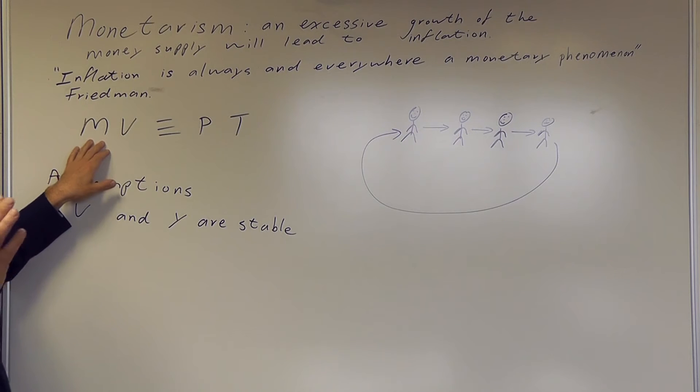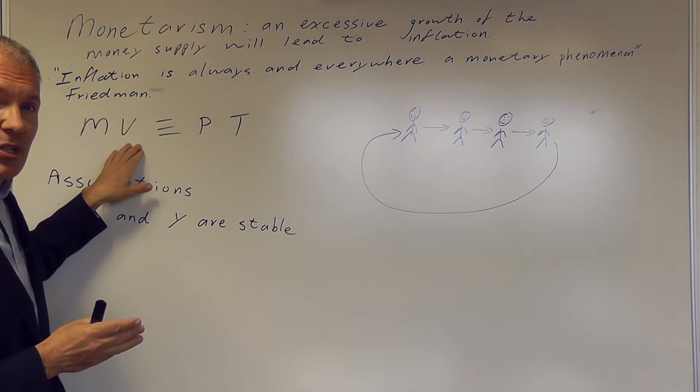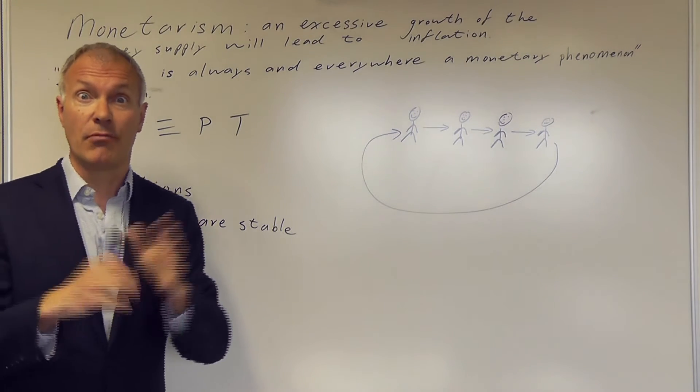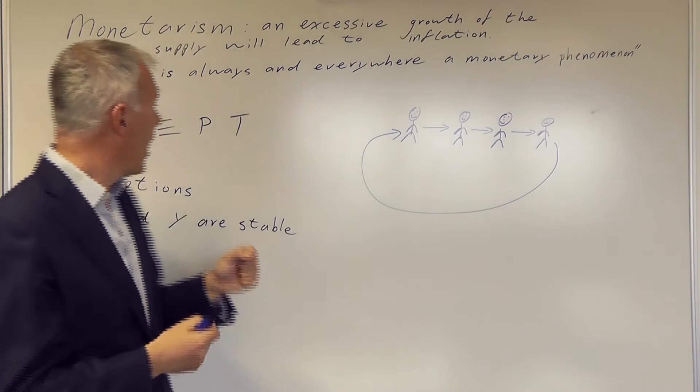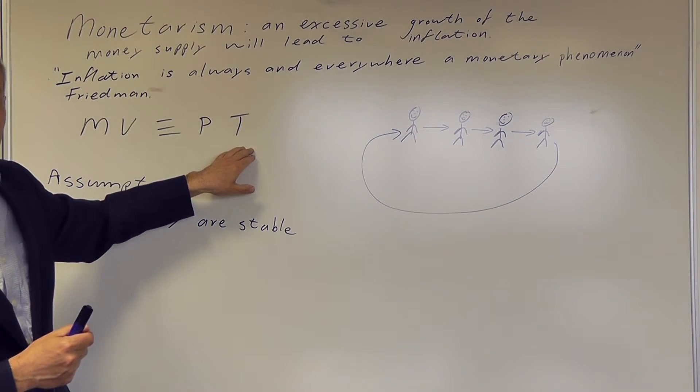Which is obviously the amount, for example, notes and coins of money in the economy. V stands for the velocity of circulation, and that really means the speed at which money moves around the economy. And P stands for price level and T stands for the level of transactions.